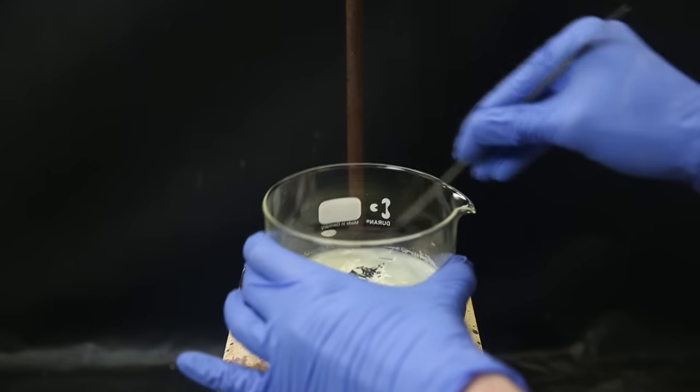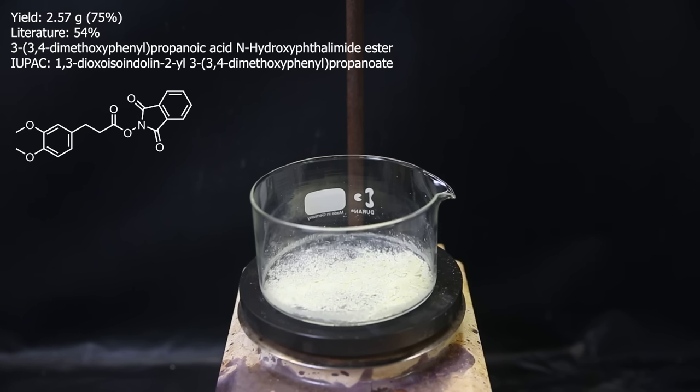And then scrape it all off, and I am left with 2.57 grams of what should be the product. If it's pure, that would mean the yield is 75%, which is higher than the literature. But it probably isn't. Though having a bit higher yield isn't too suspicious since it seems that the solvent used for the column in the literature wasn't the best for this compound and I did modify it a bit.